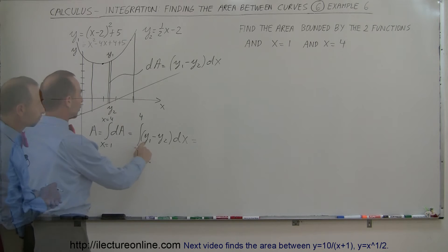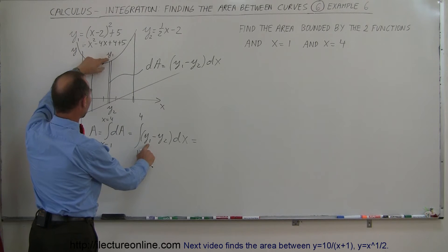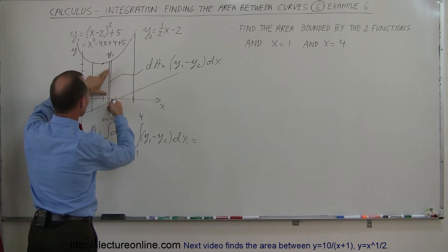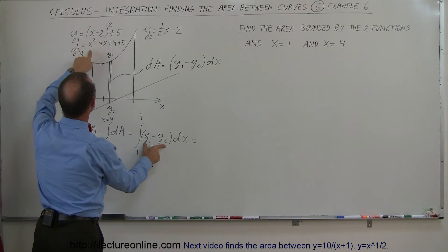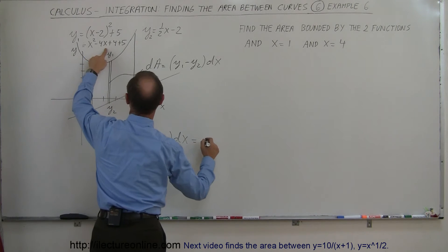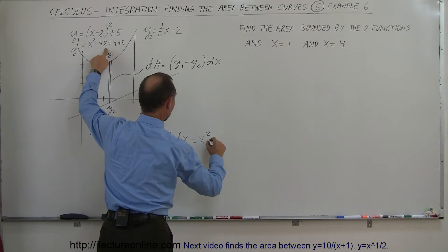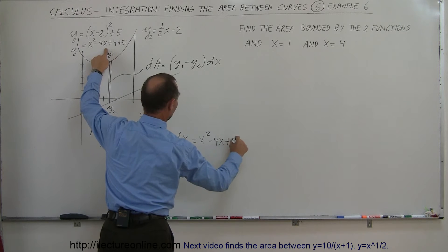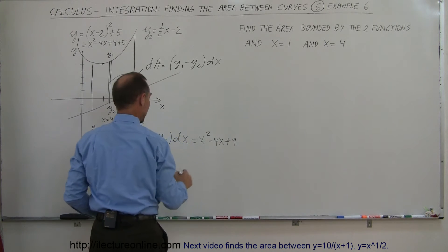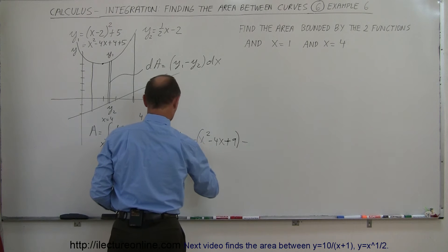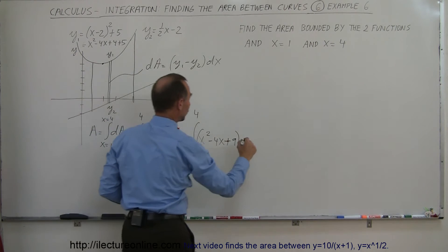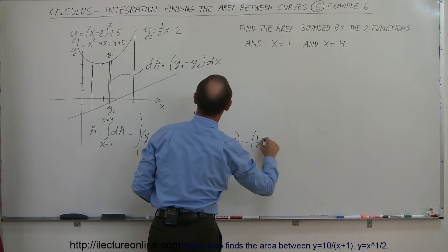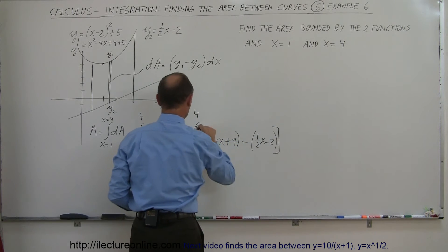So here we have y1 is the upper end of the rectangle, y2 is the lower end of the rectangle. Now we have to replace what those are equal to in terms of x. y1 worked out is equal to x squared minus 4x plus 4 plus 5 is 9. And I subtract from that y2. y2 is equal to one half x minus 2 and the whole thing multiply times dx.